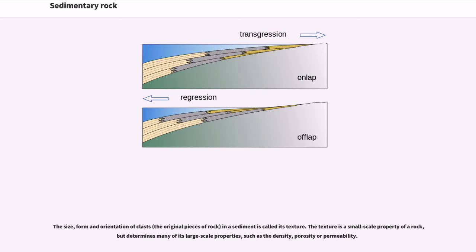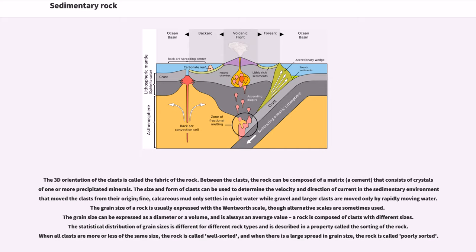The size, form and orientation of clasts in a sediment is called its texture. The texture is a small-scale property of the rock, but determines many of its large-scale properties, such as the density, porosity or permeability. The 3D orientation of the clasts is called the fabric of the rock. The size and form of clasts can be used to determine the velocity and direction of current in the sedimentary environment. The grain size of a rock is usually expressed with the Wentworth scale.